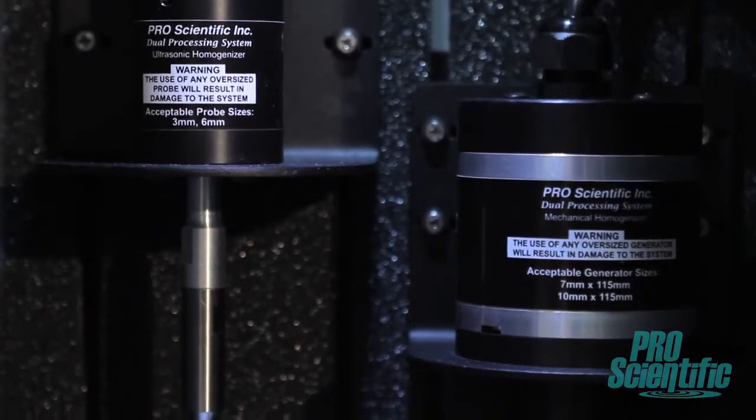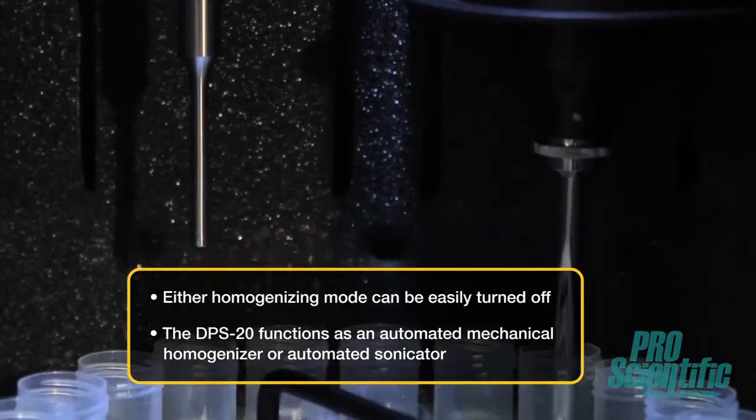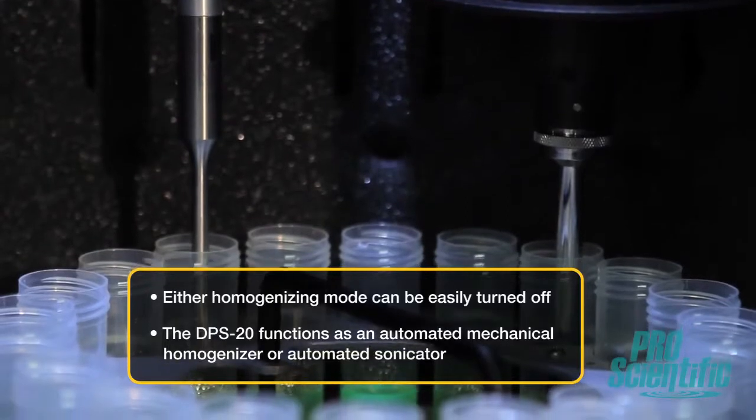However, if your specific sample would not benefit from dual processing, either homogenizing mode can be easily turned off so that DPS20 functions as an automated mechanical homogenizer or an automated sonicator.